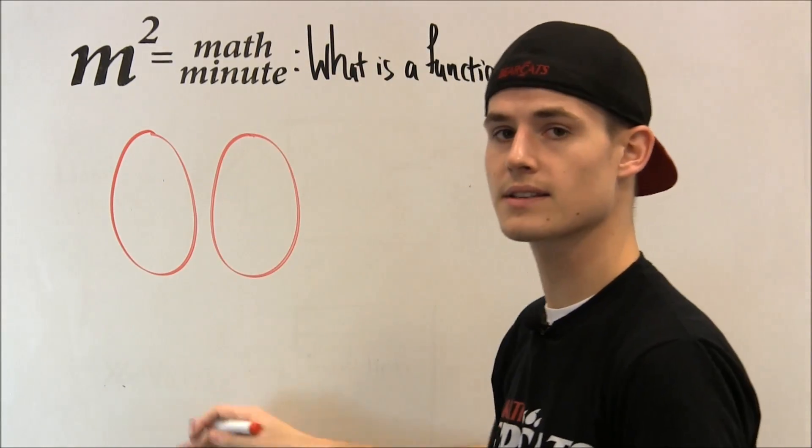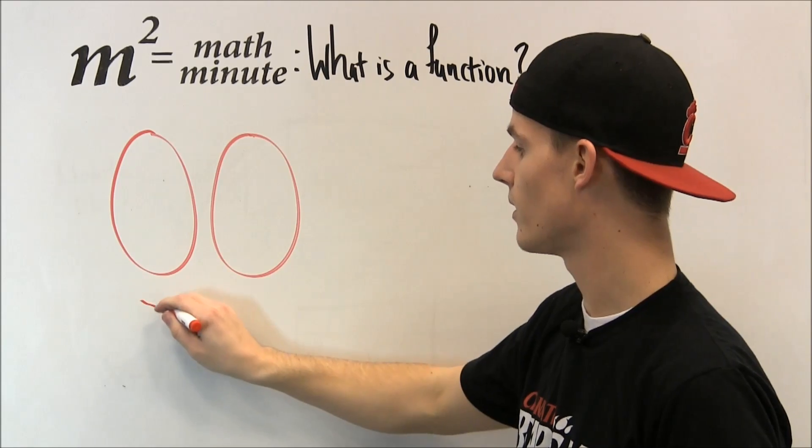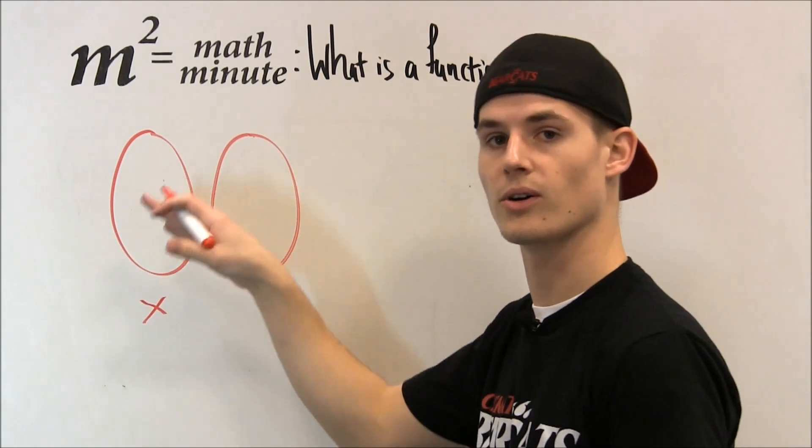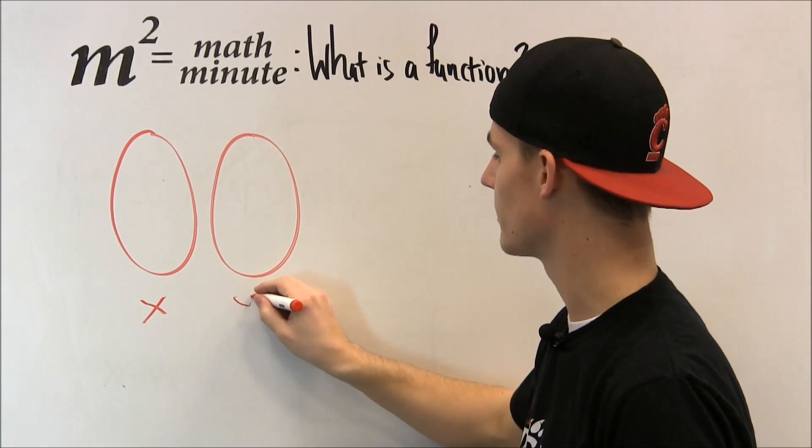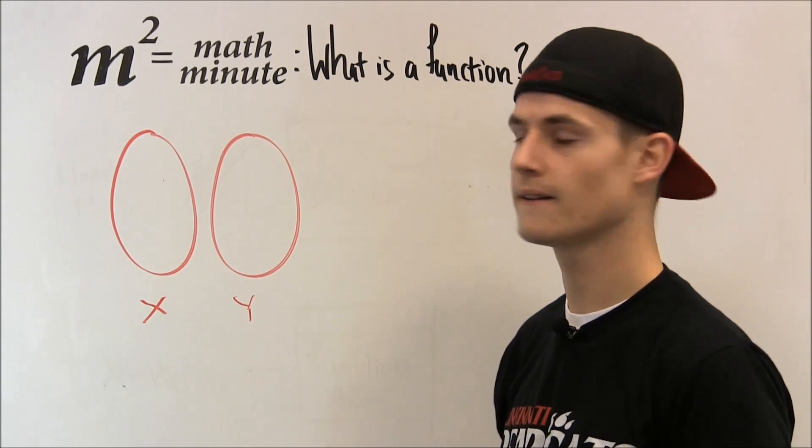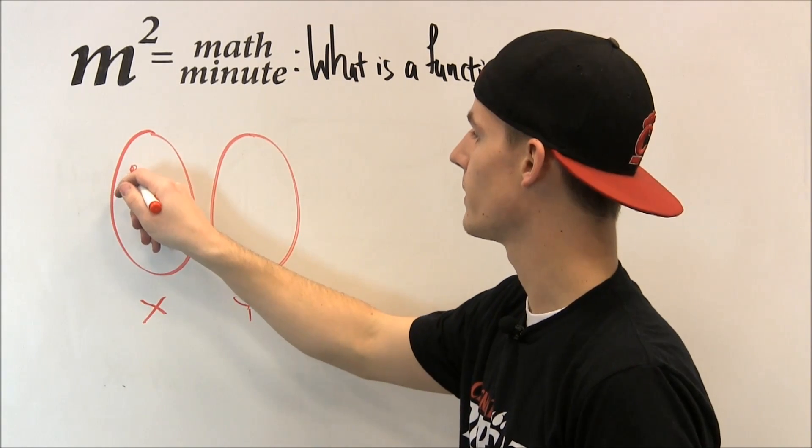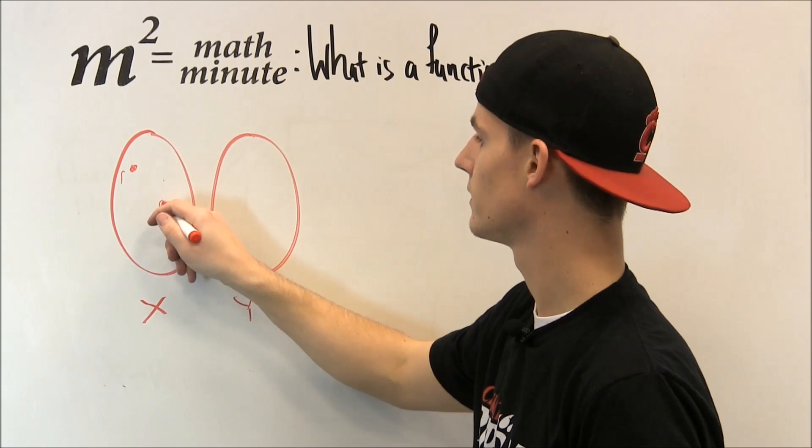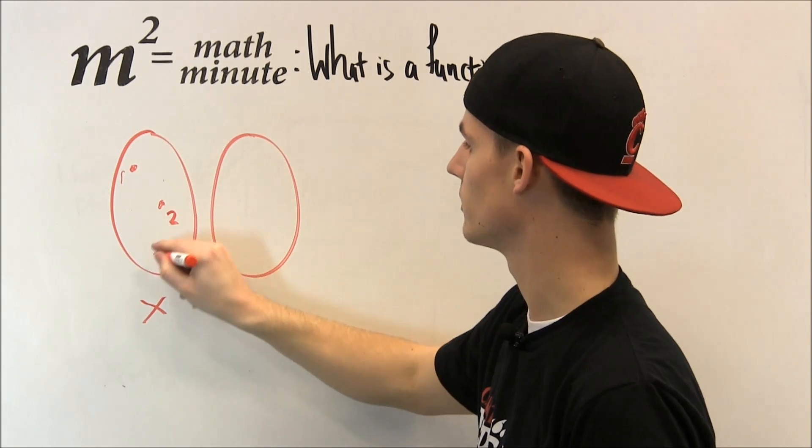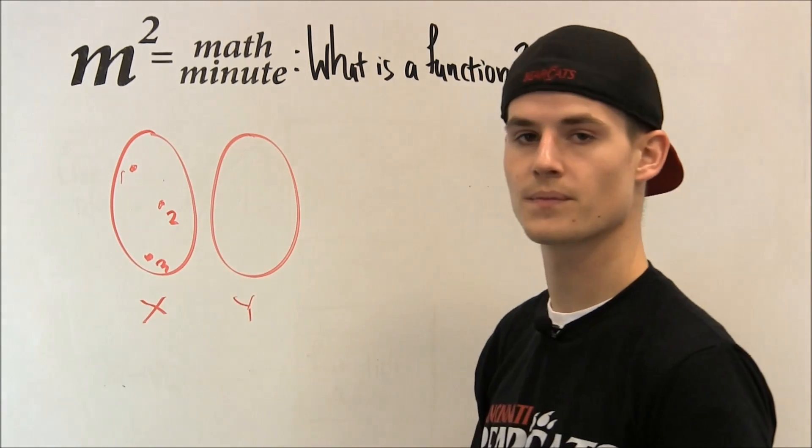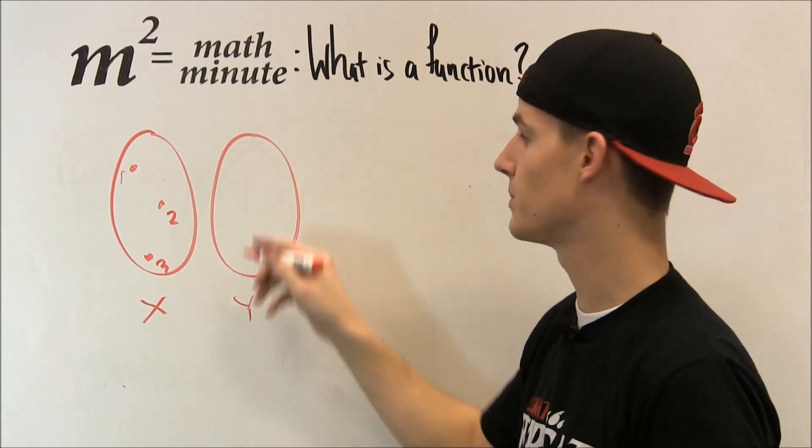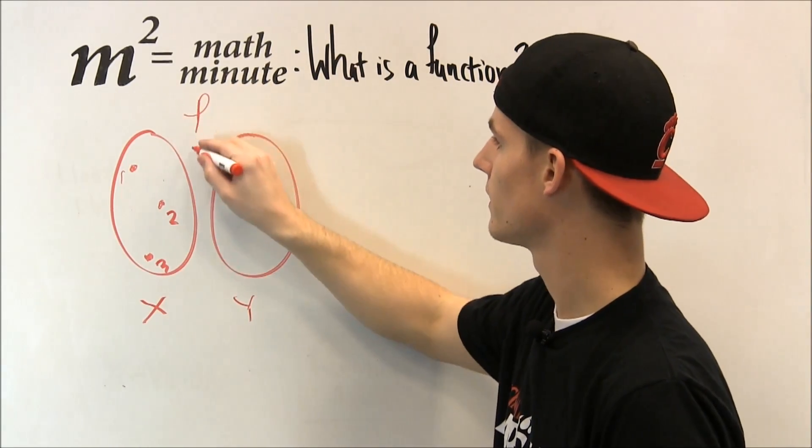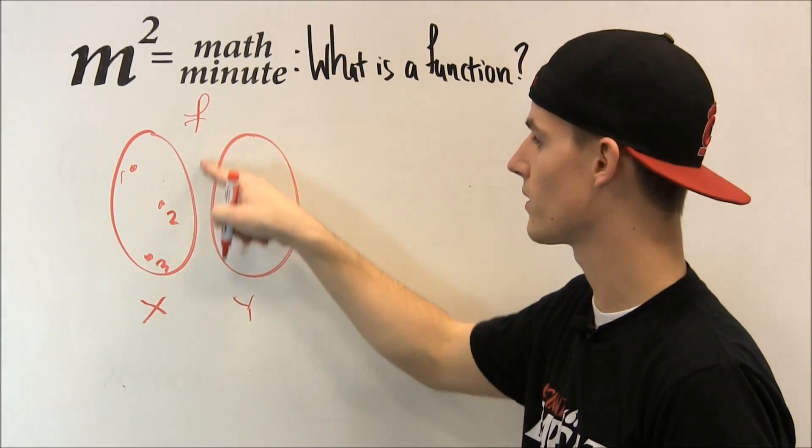This is going to be our x values. This is going to be all the x values we have, similar to all the wooden blocks. And this is going to be the y values. So over here we can have something like 1, 2, and 3, and we'll map them to different numbers because in between here is our function. This is where the function is occurring.